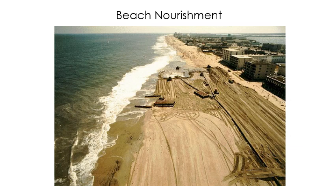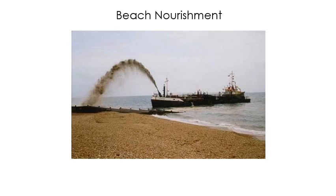Another way people deal with eroding beaches is beach nourishment — simply bringing in sand and dumping it there to keep the beach wider. Here we see trucks bringing in sand to widen a beach that's been narrowed by longshore drift. The beach will eventually wear away and you'll have to do it all over again. You can also dredge sand from offshore and spray it up onto shore with boats. Basically the process is the same: you dump more sand, and eventually you have to dump more because it gets washed away.